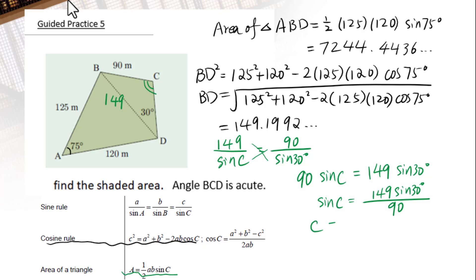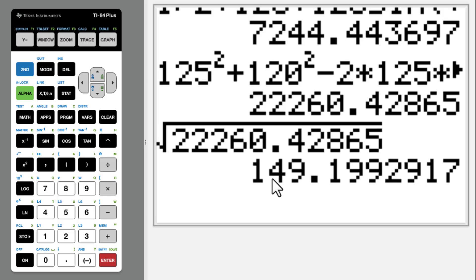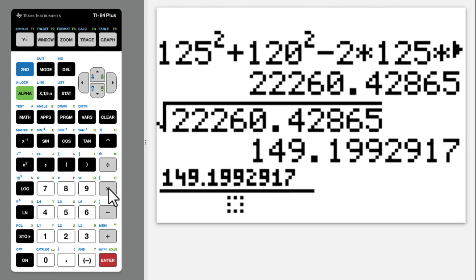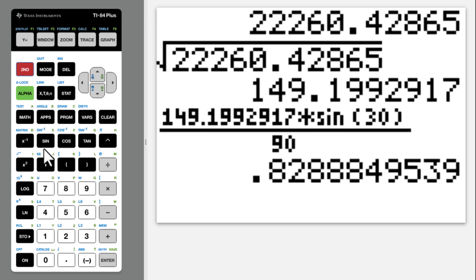Then angle C equals inverse sine of 149 sine 30 degree over 90. We will use the 149.1992 as the length of BD. Alpha Y equals 149 times sine 30 divided by 90. Then second sine.